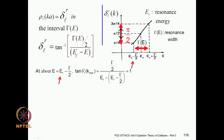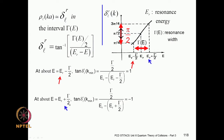At energy E = E_r − Gamma/2, the E_r terms cancel and Gamma/2 divided by Gamma/2 gives +1, so the tangent of the phase shift equals +1 at E_r − Gamma/2. At the upper value E = E_r + Gamma/2, E_r cancels but now you have Gamma/2 divided by −Gamma/2, giving −1. So at E_r − Gamma/2, tan(phase shift) = +1, and at E_r + Gamma/2, tan(phase shift) = −1.